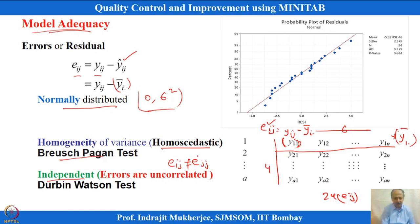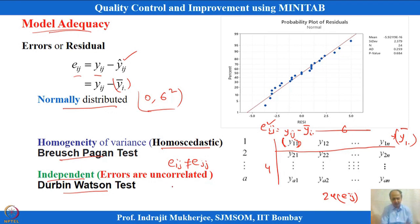The Durbin-Watson test statistic is used to verify that errors are independent. In chemical processes, observations are sometimes correlated, and as a result the errors may also be correlated. Such scenarios can occur and need to be addressed.